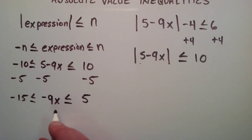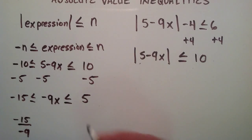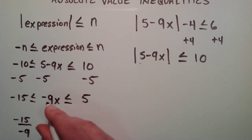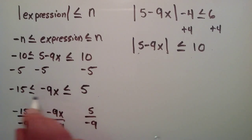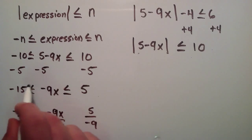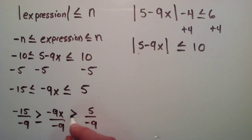Now we want to divide all three terms by negative 9 to get x by itself in the middle. So we do negative 15 divided by negative 9, negative 9x divided by negative 9, and positive 5 divided by negative 9. I want to remind you that any time you multiply or divide by a negative number, you need to flip the inequality sign. So these less than or equal to signs now become greater than or equal to signs because we divided by a negative number.